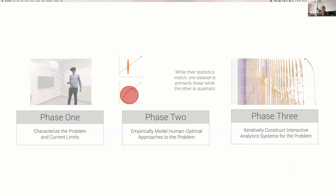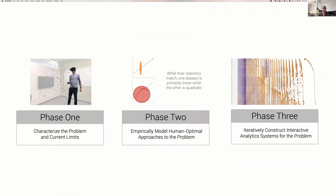Our process generally consists of three phases. First involves discussions with domain experts to identify what problem they're trying to solve and current limitations. We then conduct empirical studies to model how we can optimize our representations. Once we understand what the user needs, we embody these models in interactive exploratory analysis systems.